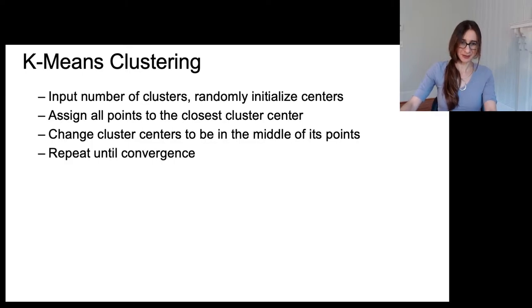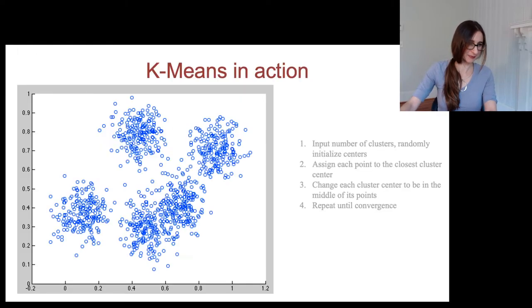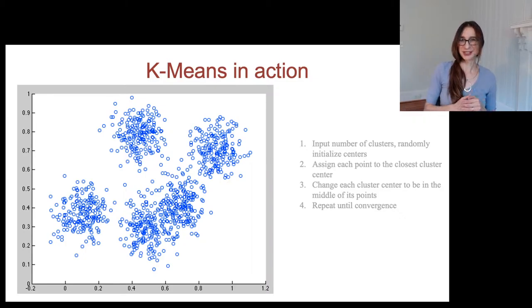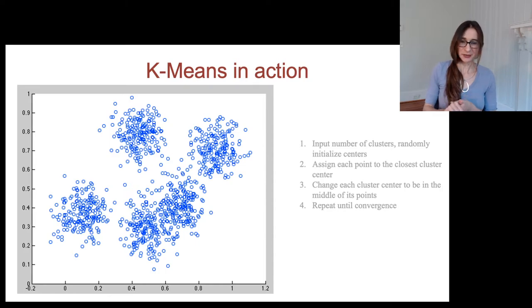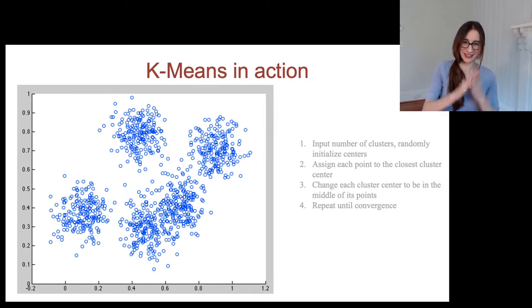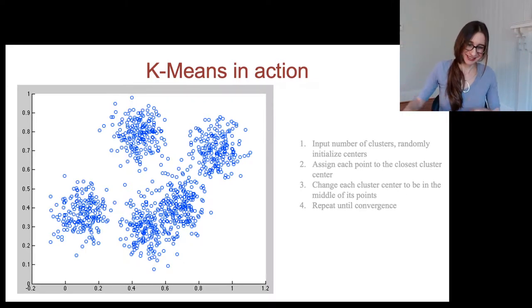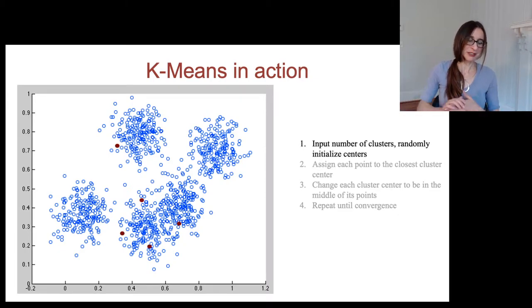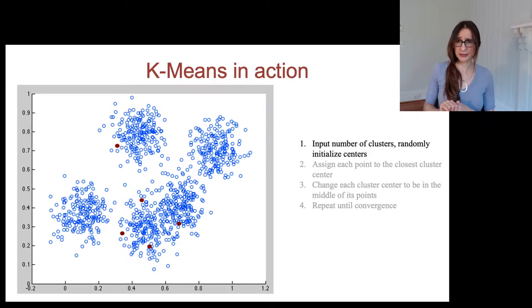Now I'm going to walk through those steps with an example. We take our data — here it's in two dimensions so we can see everything — and input the number of clusters, which happens to be five because we can see the whole thing. In reality with high-dimensional data you wouldn't know this, but for now let's go with five. Then we randomly initialize the cluster centers, which were definitely not chosen well, but that's okay because they're going to move.